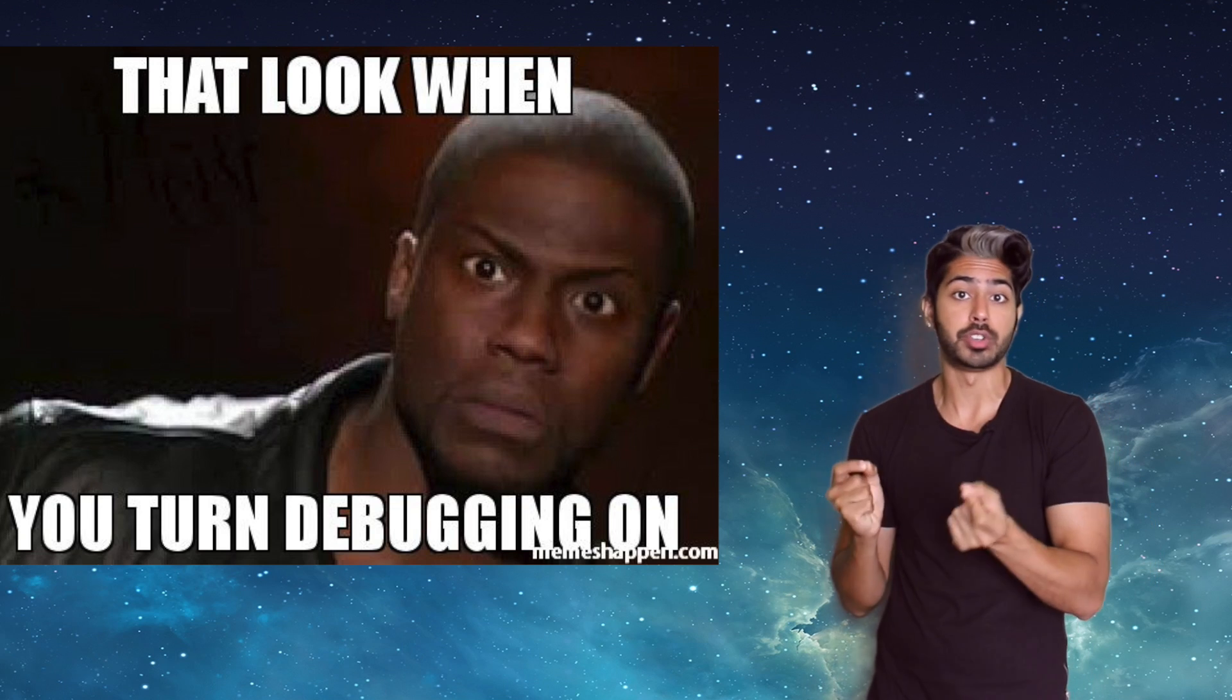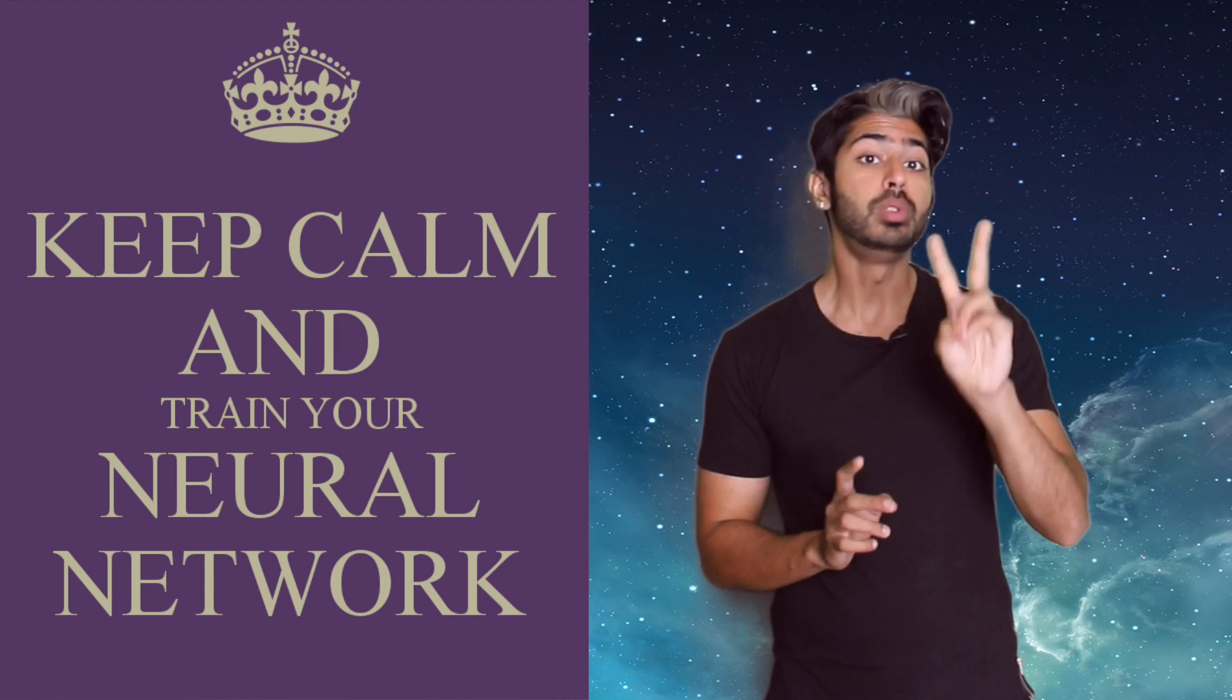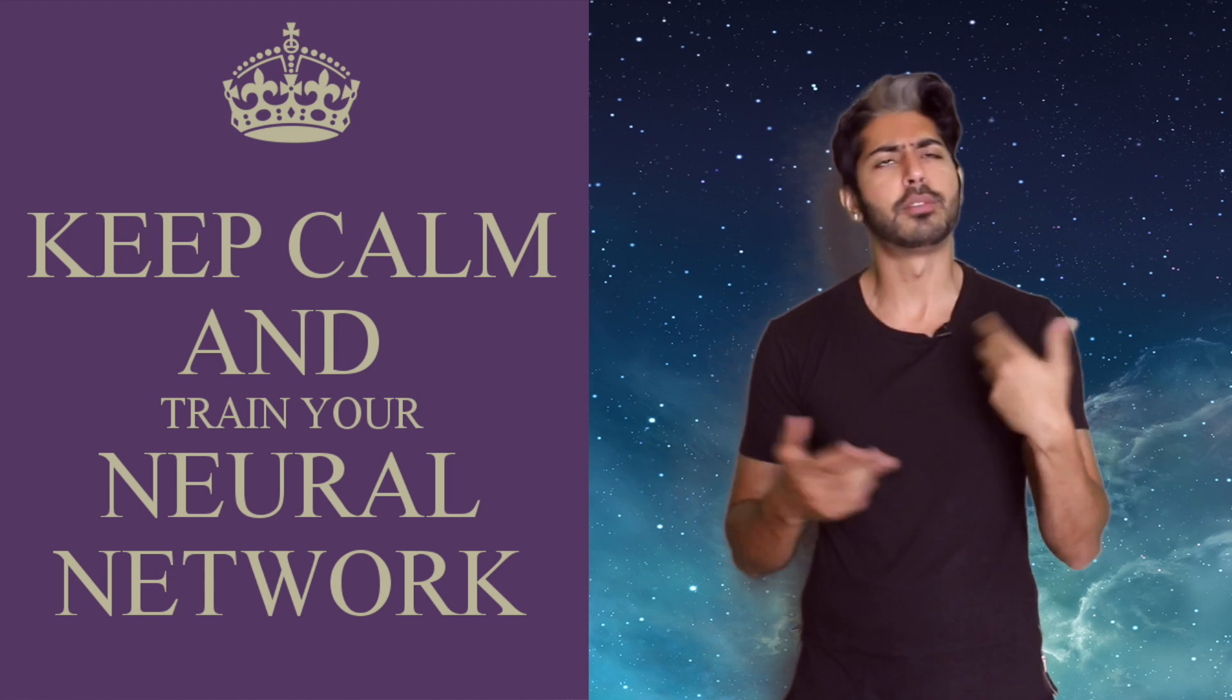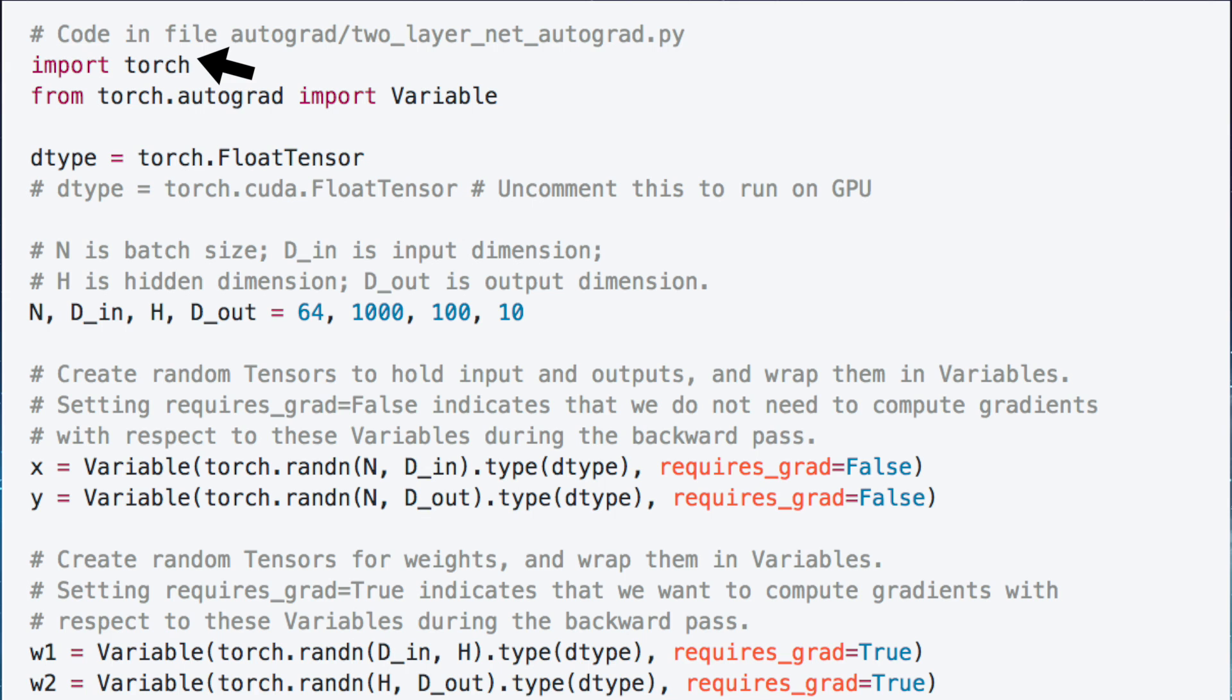Let's build a simple two-layer neural network in PyTorch to get a feel for the syntax. We start by importing our framework as well as the autograd package, which will let our network automatically implement backpropagation. Then we'll define our batch size, input dimension, hidden dimension, and output dimension.